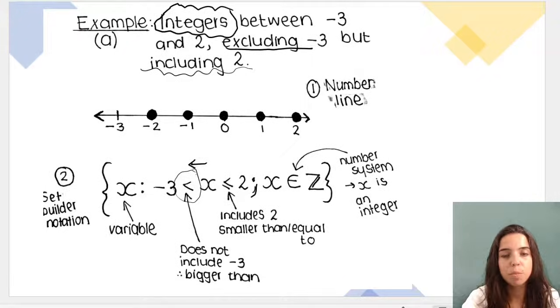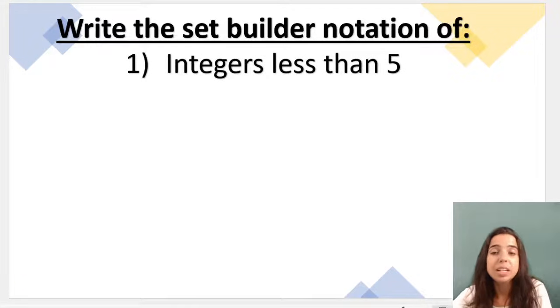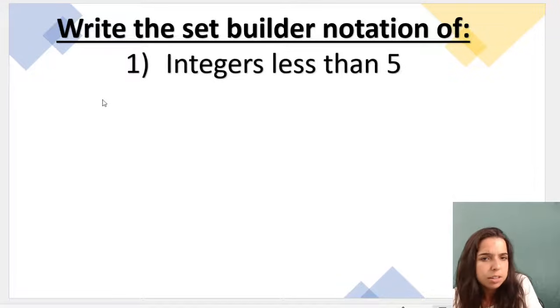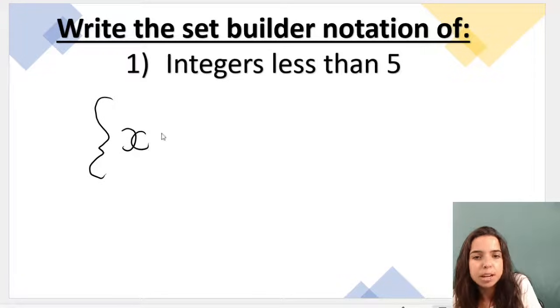In my next example, I'm going to write the set builder notation of integers less than 5. So what we do is we start with our curly brackets. I'm going to say that my variable's x, we use our semicolons. Now be careful, integers less than 5.